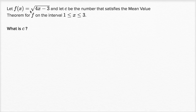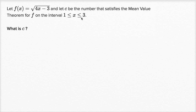Let f of x be equal to the square root of 4x minus 3. Let c be the number that satisfies the mean value theorem for f on the closed interval between 1 and 3, where 1 is less than or equal to x is less than or equal to 3. What is c?